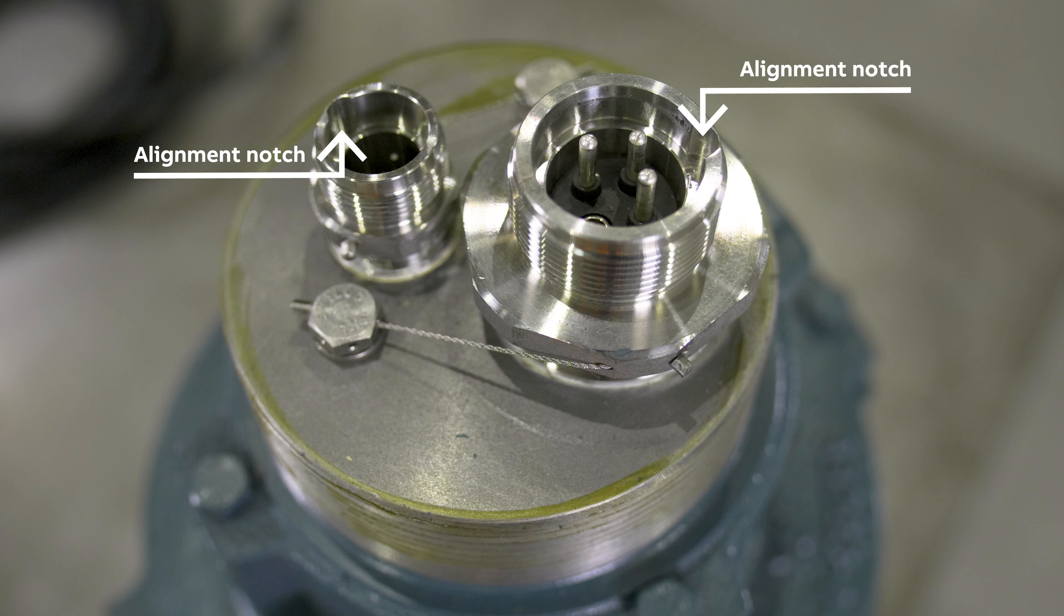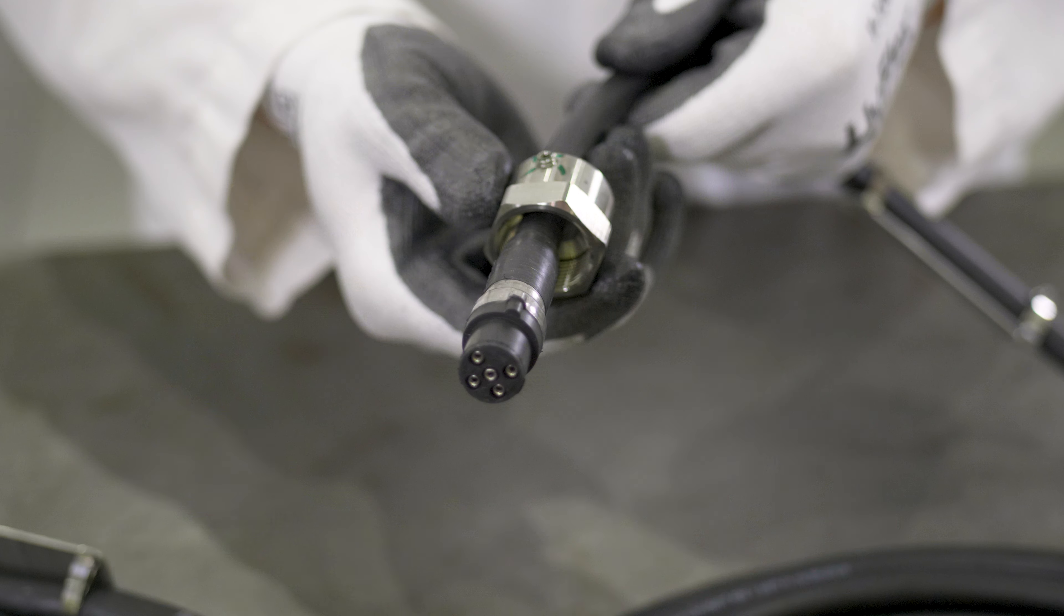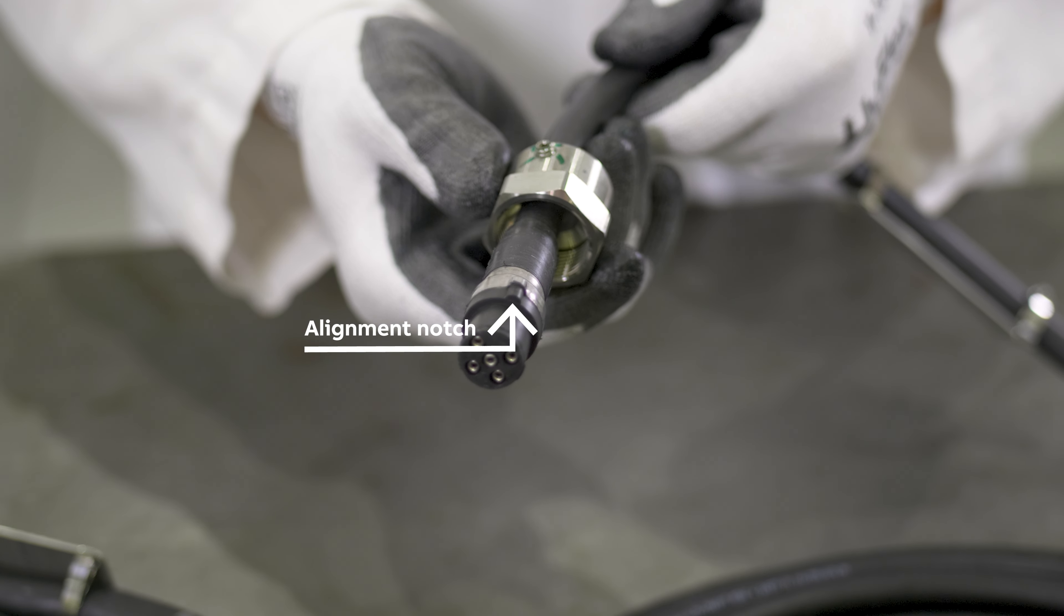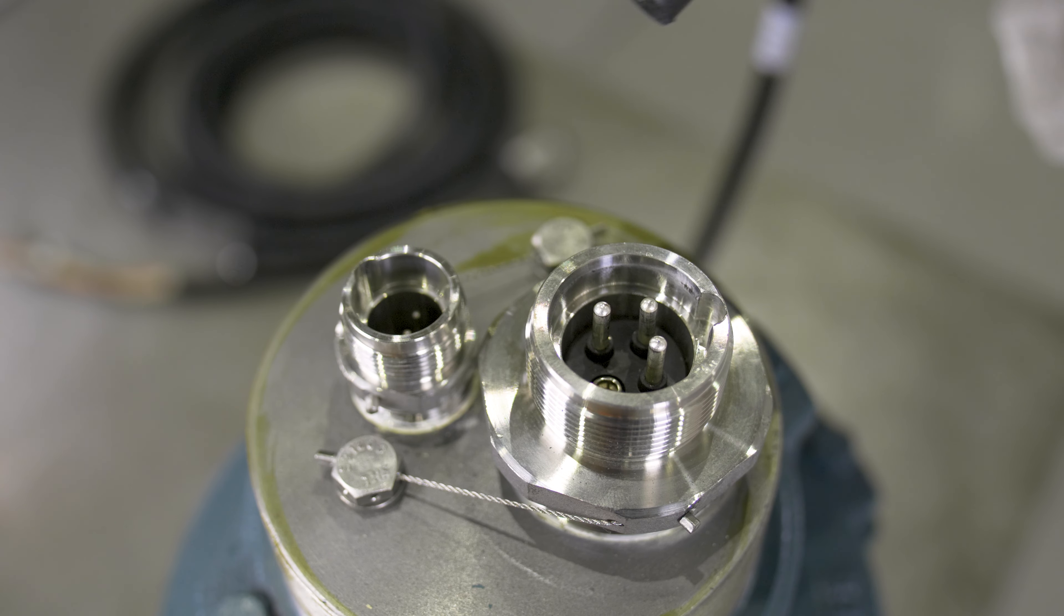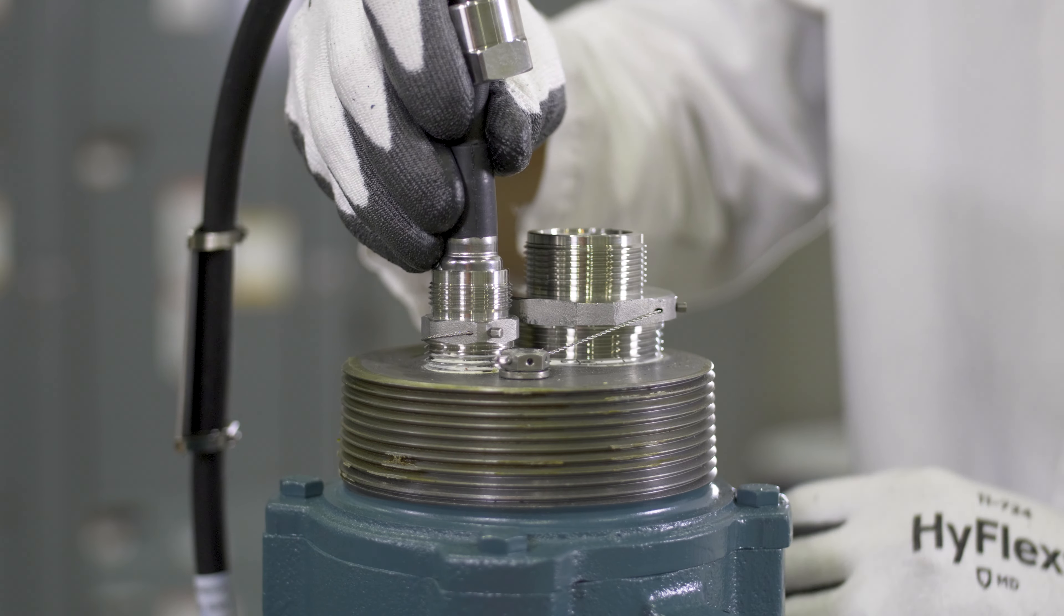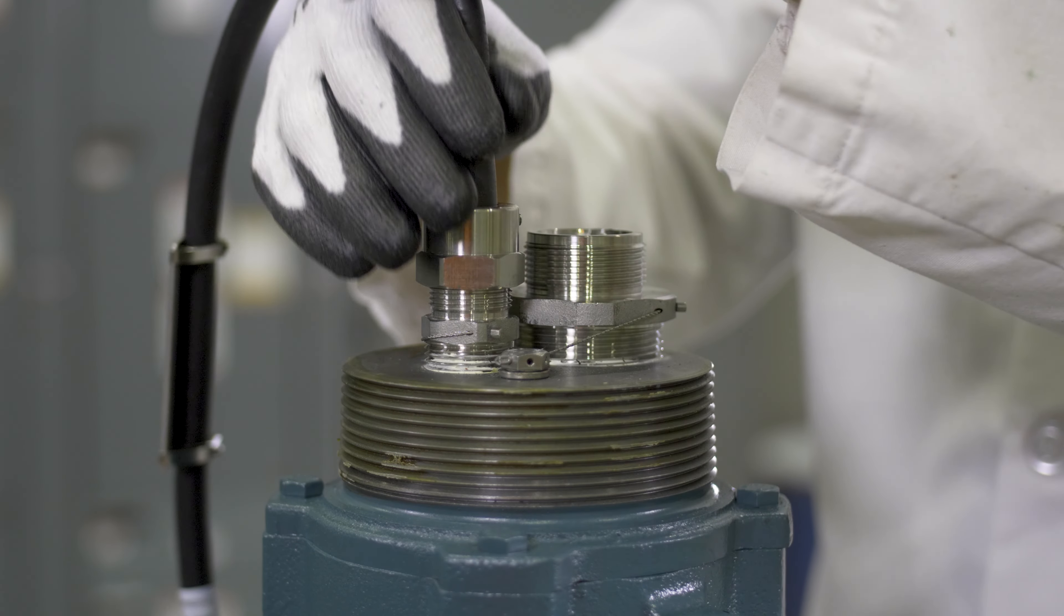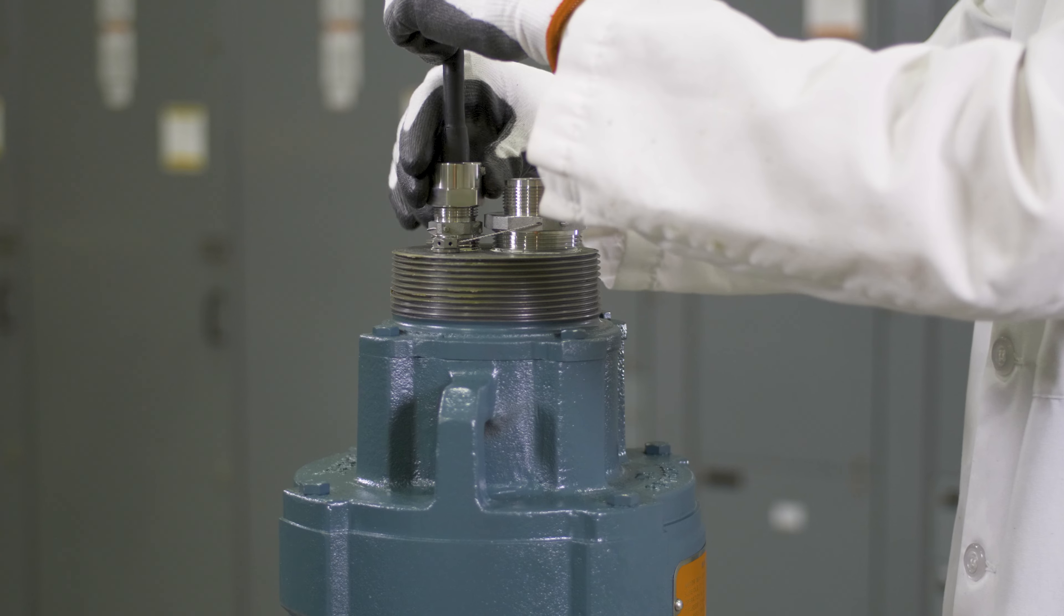The receptacle and cable connector each have an alignment notch to ensure proper pin connection. Insert the cable connector into the receptacle. Ensure that the protrusion on the cable connector is aligned with the receptacle notch.